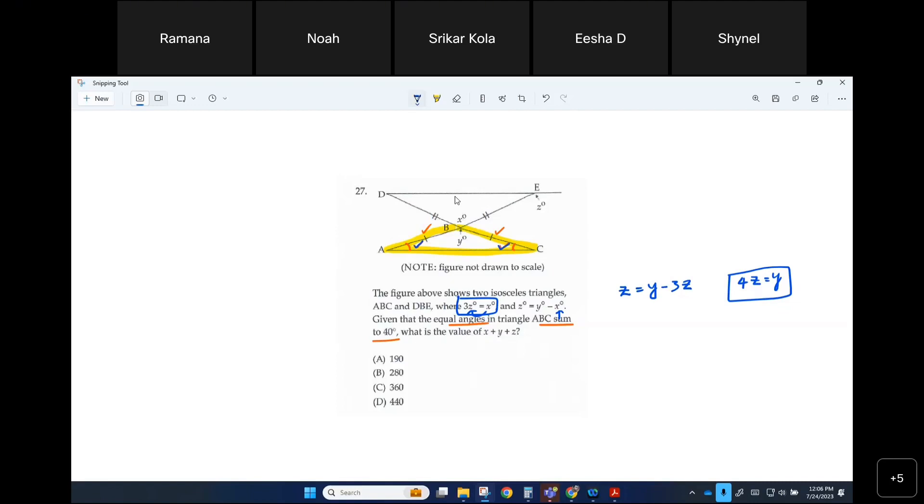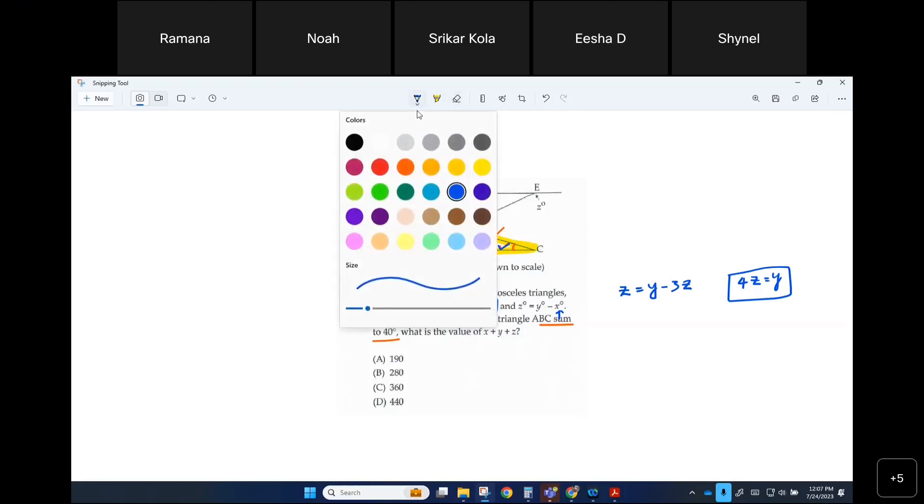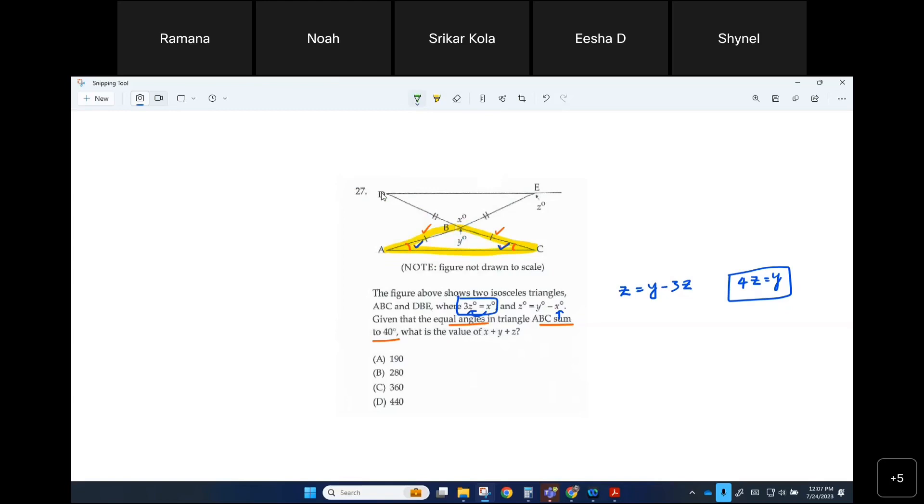Again, you are missing the point. Let's say this is, not x, because I don't want to pick x. Let's say that is s. Yes, okay, yes. Yes, they both add up to, equal angles sum to 40. That means s plus s equals 40. What is the value of it? It would be 20. Exactly, so this is 20, this is 20.